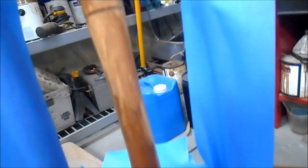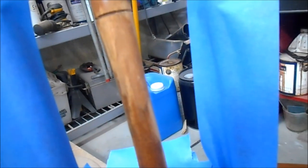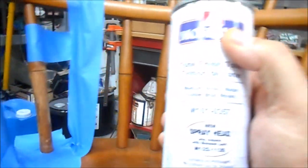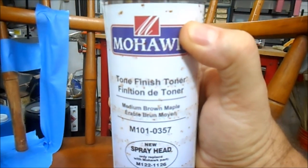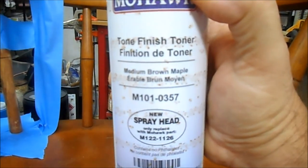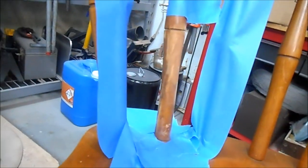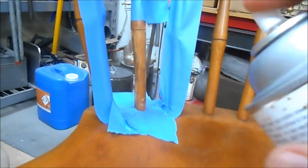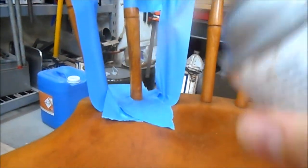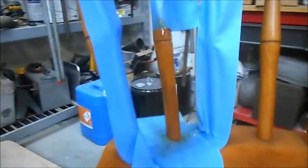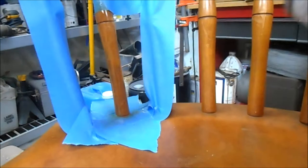We've got the epoxy dry and we've got it sanded and it came out really well. Mohawk Tone Finish Toner medium brown maple is the color. I've got the adjacent spindles taped off. Let's just see how this does as far as bringing back the original color. It's going to work really well.